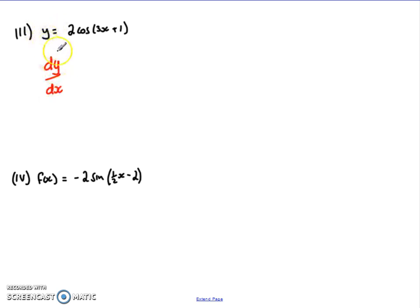So dy by dx, because this is a y equals, we write down our coefficient, take derivative of this part, and then we take derivative of this part at the end, and then simplify the whole thing. So derivative of a cos is minus sine, so it's 2 times minus sine of 3x plus 1.